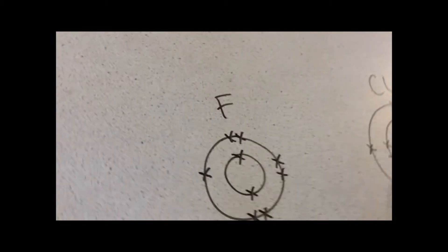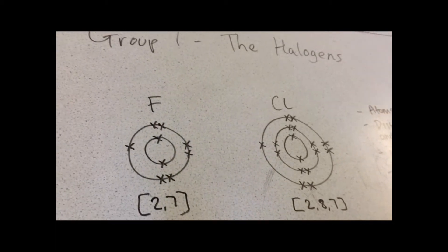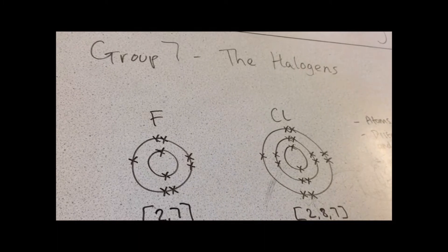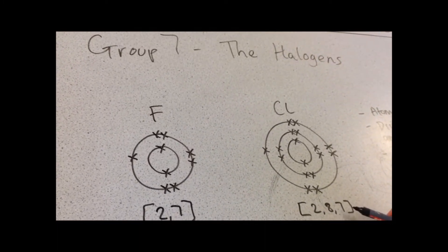So if we look at Group 7, I've just drawn out here the electron structure of fluorine and chlorine. Now as we go down the group you can see the atoms are getting bigger. Now they're in Group 7, so they have 7 electrons in their outer shell.